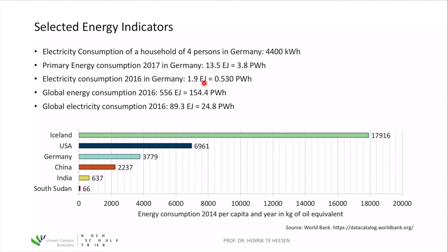Looking at global primary energy consumption — again covering electricity, heat, and transportation — it was 556 exajoules or 154.4 petawatt-hours. Germany is a small country but an industrial one, with a significant share of global energy consumption. Globally, electricity consumption is nearly 90 exajoules or 25 petawatt-hours, which represents roughly 50 percent of global primary energy demand being attributed to electricity.